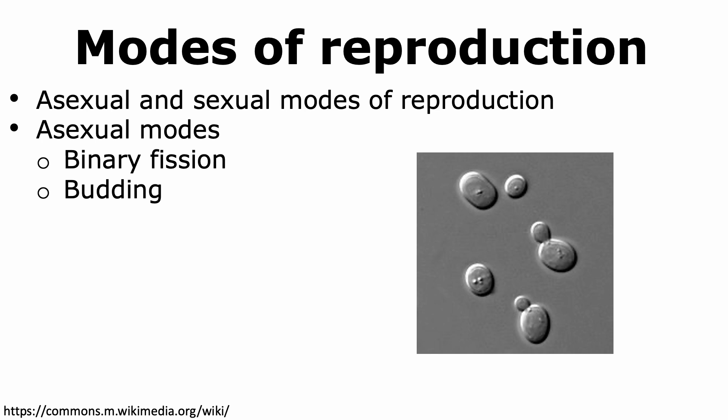Budding is another form of asexual reproduction observed in protists. In budding, a small outgrowth is formed on a cell, and this outgrowth, or bud, grows in size. The parent cell will ultimately replicate its genome and provide a copy to the bud. The bud grows in size and finally breaks off from the parent cell. Thus, we are able to form two cells, but one cell is smaller in size than the other. Eventually, the bud will grow in size to match that of the parent cell. Hence, in budding we form two cells, but the process is different from binary fission.